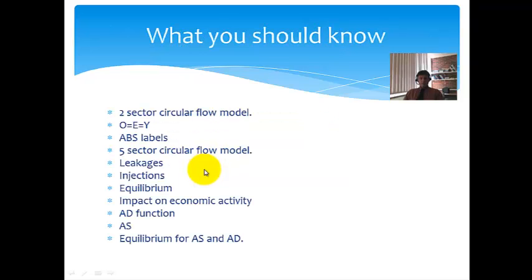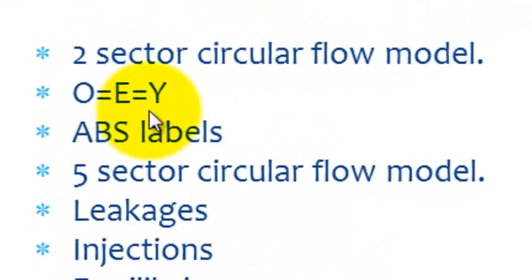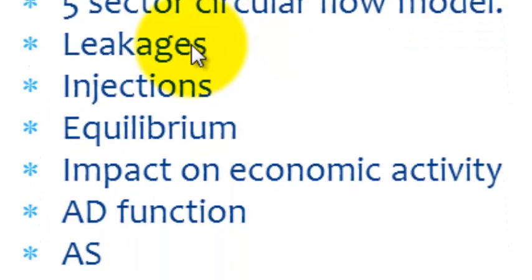Now what you should have learned so far is the two sector model and its associated flows. The fact that output flows equal expenditure flows equal the income flow. There's related Australian Bureau of Statistics labels to each one of these three flows. You should know the sectors in the five-circular flow model and its associated leakages and injections. How then equilibrium is established between leakages and injections, and their corresponding impact on economic activity.